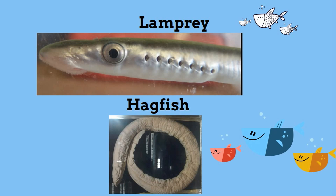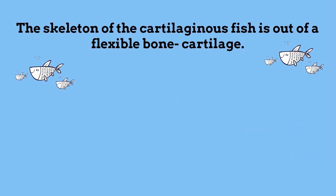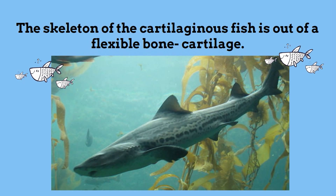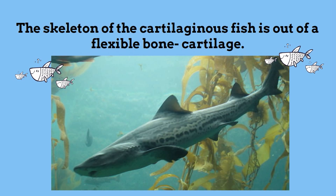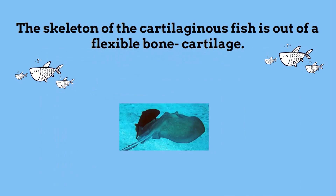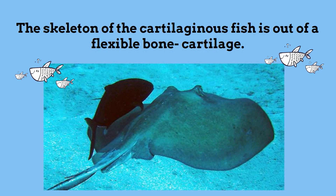Fish that have flexible bones made of cartilage are called chondrichthyes. The most common examples are sharks and rays. This group of fish contains some very fierce predators.